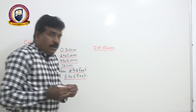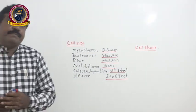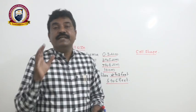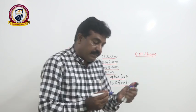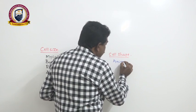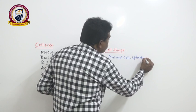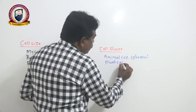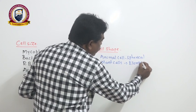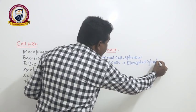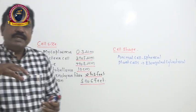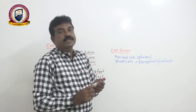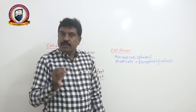Cell shape is also highly variable. In general, most animal cells are spherical in nature while most plant cells are elongated and cylindrical. However, there are plenty of cells in both animals and plants showing a lot of variation in shape, based on their function.